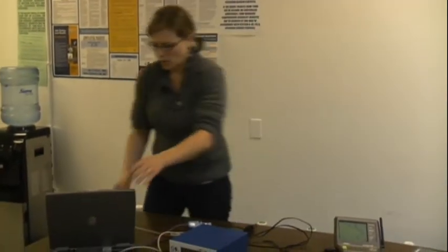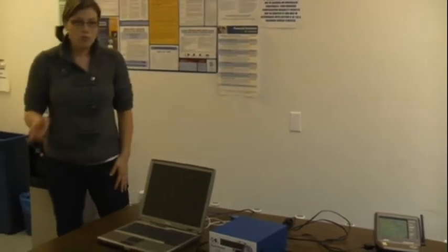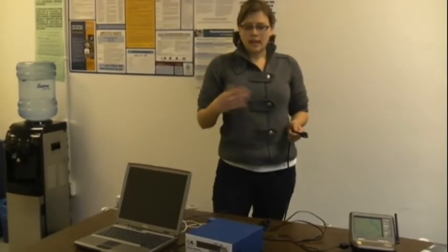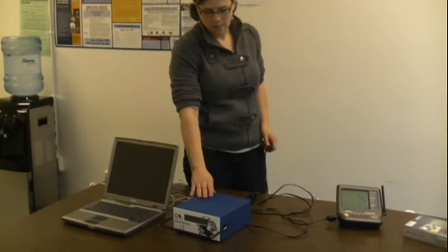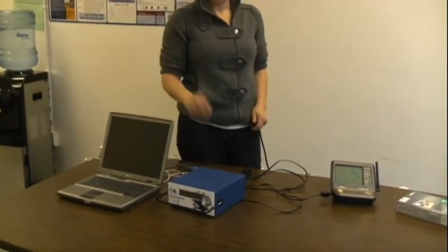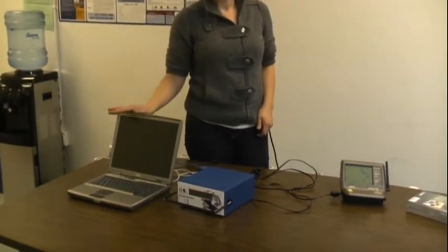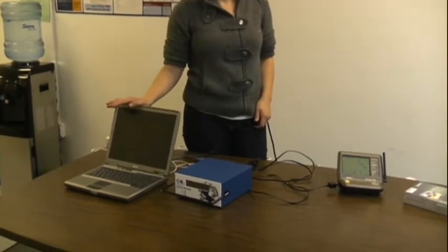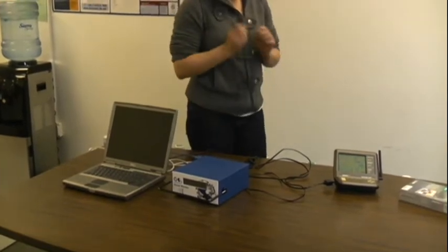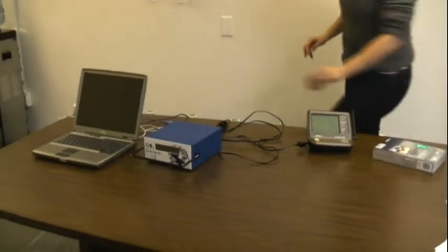The last step we'll show here is how to set the ozone monitor on 10 second averaging. Eventually you'll put it on 15 minute averaging, which means it will upload a data point every 15 minutes. But when you're first getting it set up, you won't want to wait 15 minutes to figure out if it's working or not. So you'll want to put it on 10 second averaging. We'll go ahead and plug in the ozone monitor and turn it on.